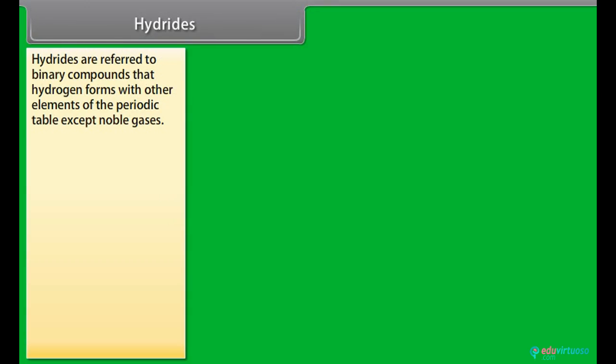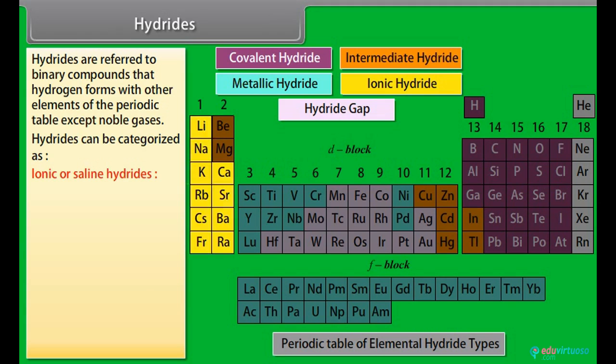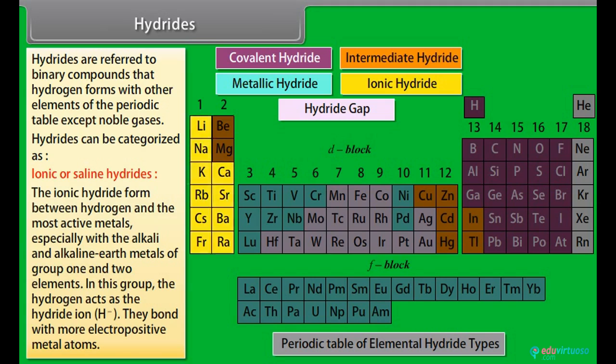Hydrides: Hydrides are referred to binary compounds that hydrogen forms with other elements of the periodic table except noble gases. Hydrides can be categorized as ionic or saline hydrides. The ionic hydride form between hydrogen and the most active metals, especially with the alkali and alkaline earth metals of group 1 and 2 elements. In this group, the hydrogen acts as the hydride ion.